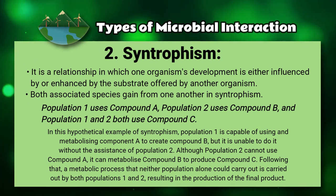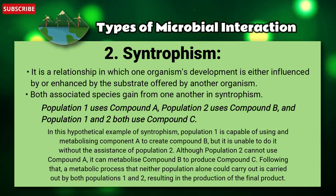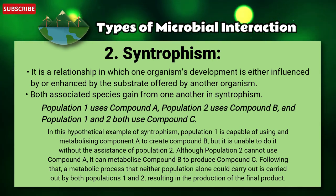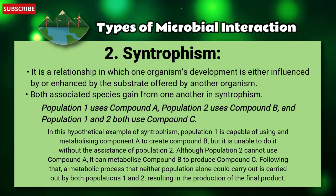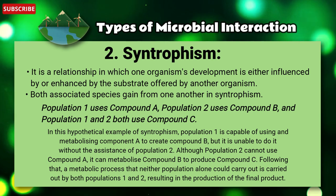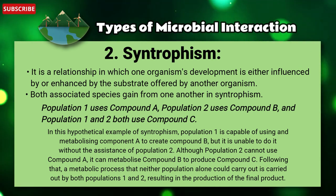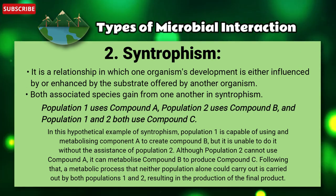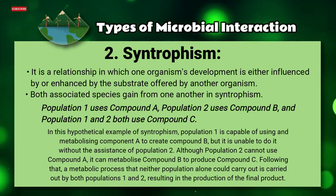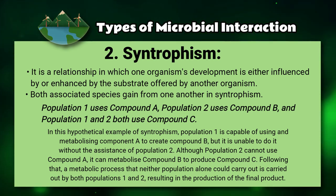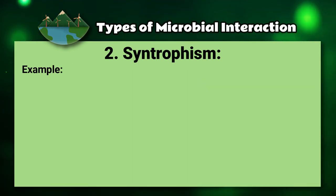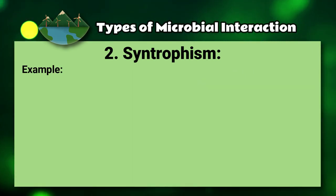Although population two cannot use compound A, it can metabolize compound B to produce compound C. Following that, a metabolic process that neither population alone could carry out is carried out by both population one and two, resulting in the production of the final product.